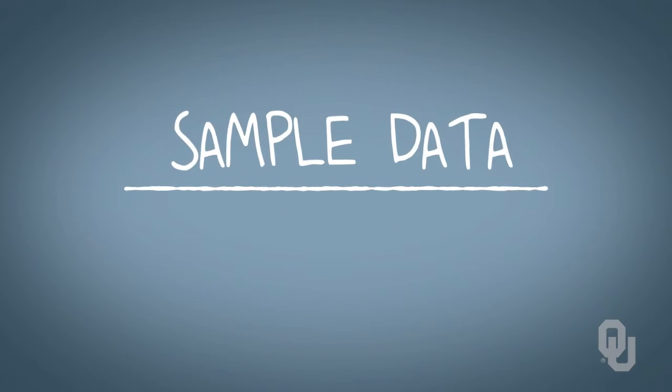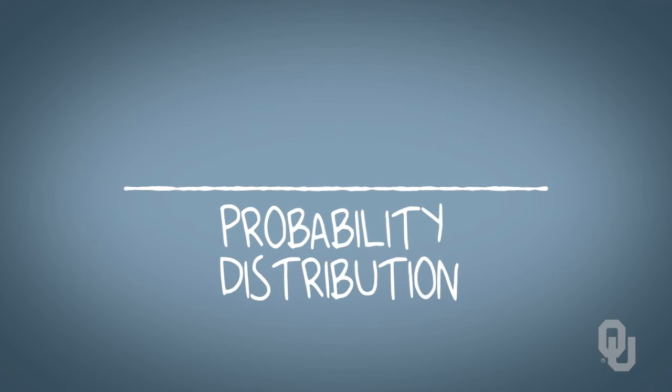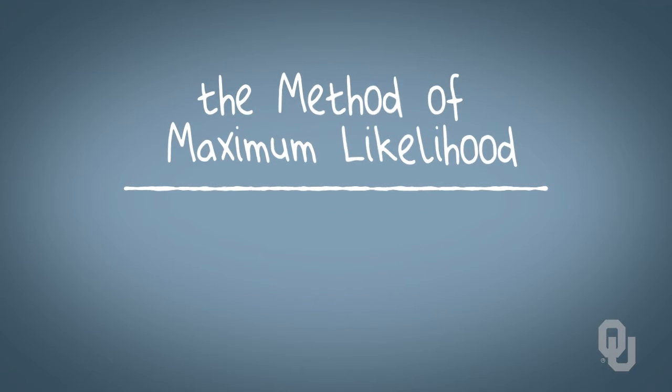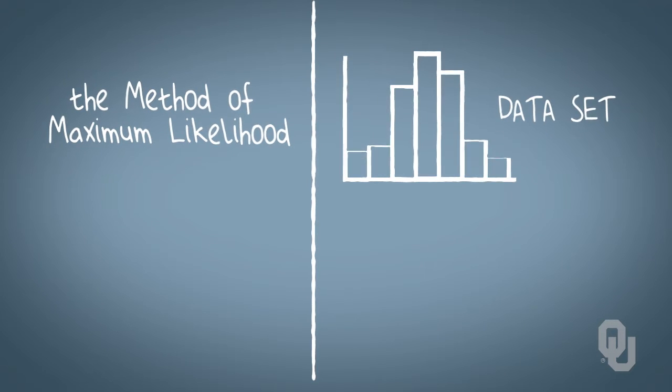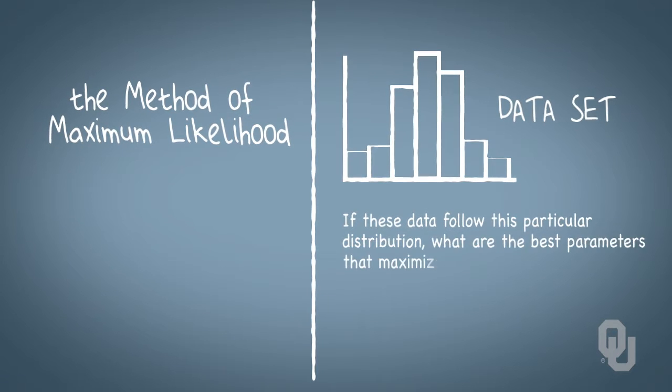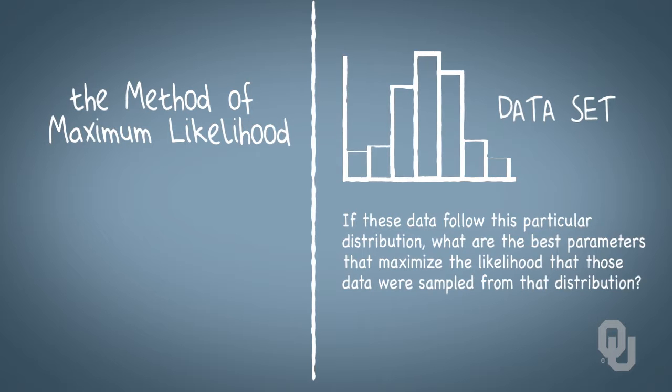The topic of turning sample data into a probability distribution is addressed with the method of maximum likelihood. The method of maximum likelihood essentially works like this: for a given data set, we say that if these data follow a particular distribution, what are the best parameters that maximize the likelihood that those data were sampled from that distribution? That sounds a little weird, but we'll talk about it more.